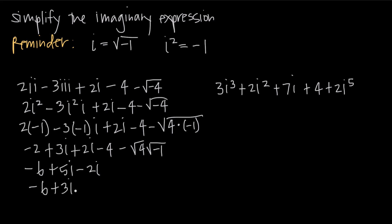Our final answer is negative 6 plus 3i. It's really important when dealing with imaginary numbers to always leave the answer in standard form — the real (whole) number first, whether positive or negative, followed by the imaginary number second. The imaginary number may have a coefficient; in this case the coefficient is 3.